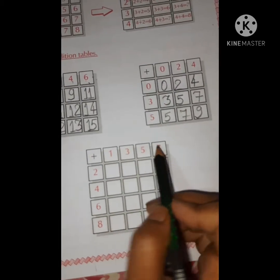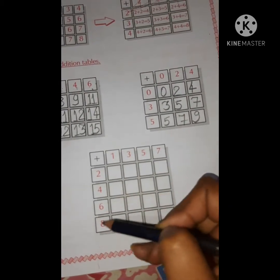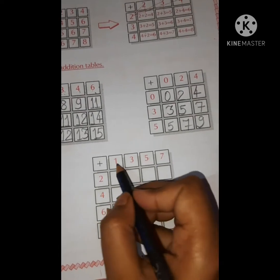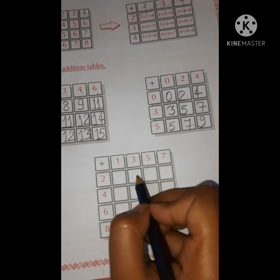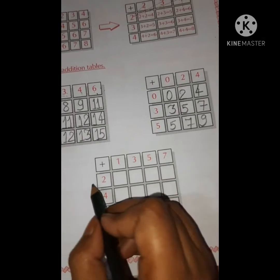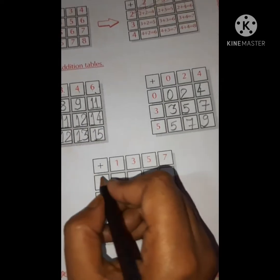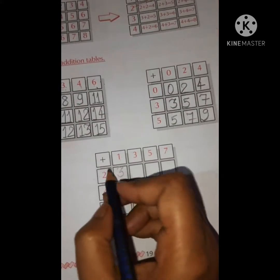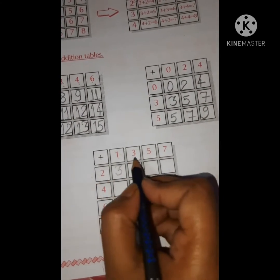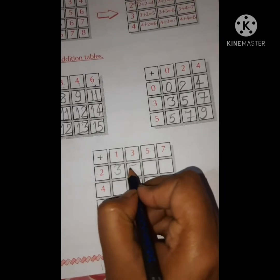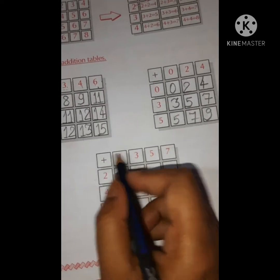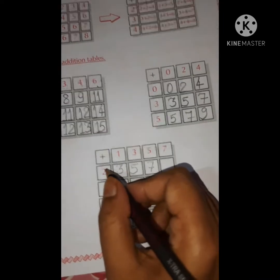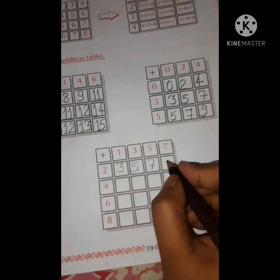Here the horizontal values are one, three, five, seven and the vertical values are two, four, six, eight. You have to add: two plus one is three, two plus three is five, two plus five is seven, two plus seven is nine.